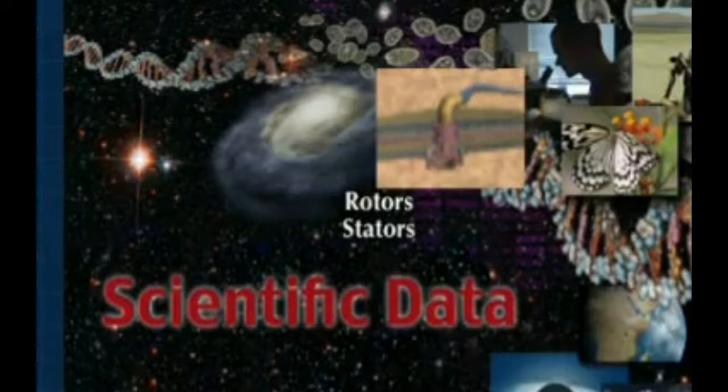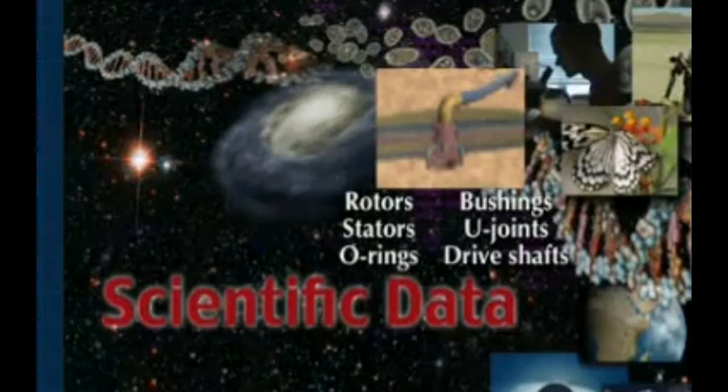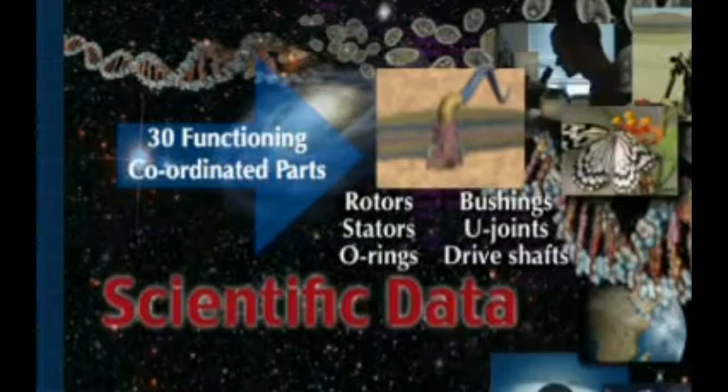This particular machine — and that is the only way to describe it — is an electrical motor. It has rotors, stators, o-rings, bushings and u-joints, and drive shafts. All of this is coordinated in thirty functioning coordinated parts, such that if any one of the thirty parts is missing, it does not work. There is no way to get the first five and then work for a while and gradually get another one. If you are missing any of them, it stops. You have got to have all of them at once. I do not think there is any way to explain that in terms of a gradual evolutionary process.